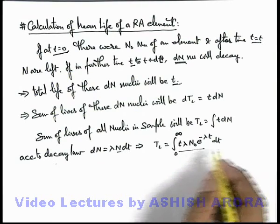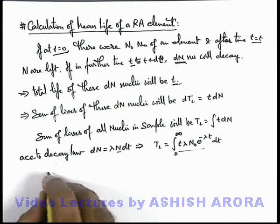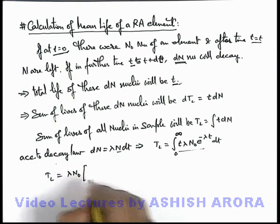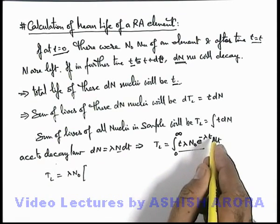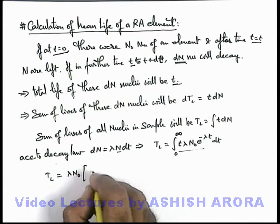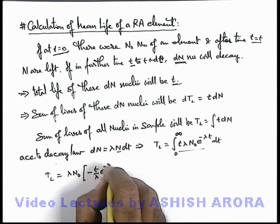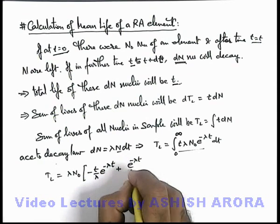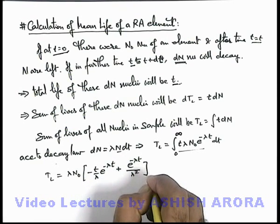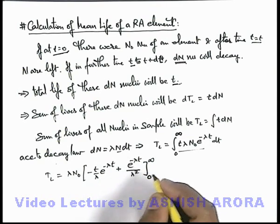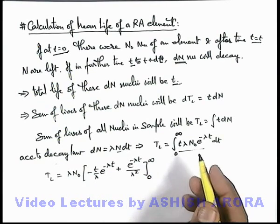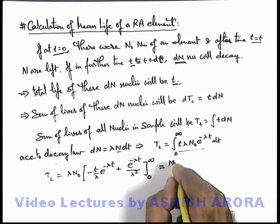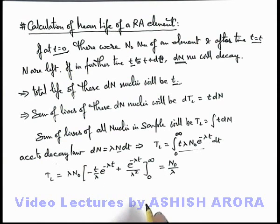Now this will be integrated by parts. When we integrate this, the total life can be written as lambda·N₀ — which is a constant — and t·e to the power minus lambda·t integrated gives minus t by lambda·e to the power minus lambda·t, plus e to the power minus lambda·t by lambda squared, applying limits from zero to infinity. I am leaving this integration by parts as an exercise for you, and if you substitute the limits, after calculation this gives N₀ by lambda.